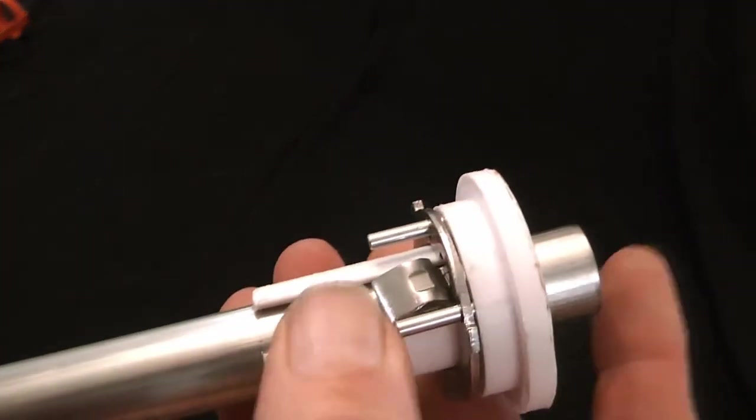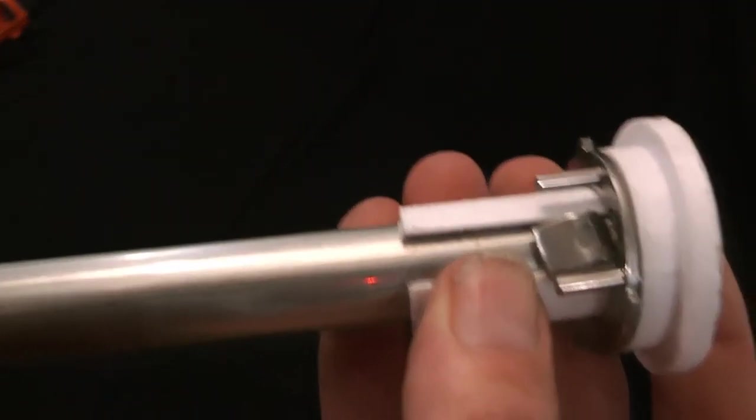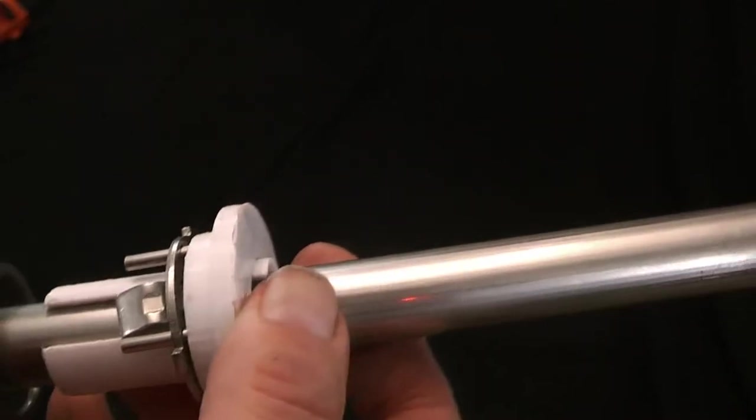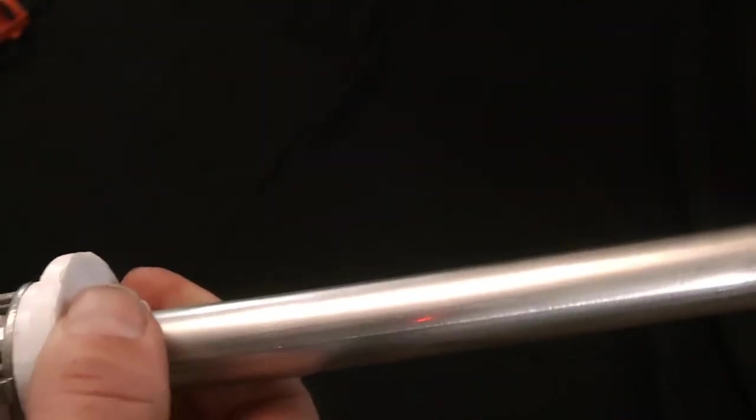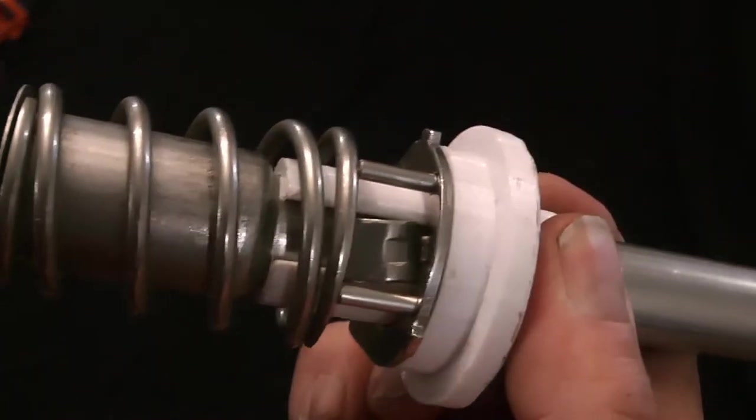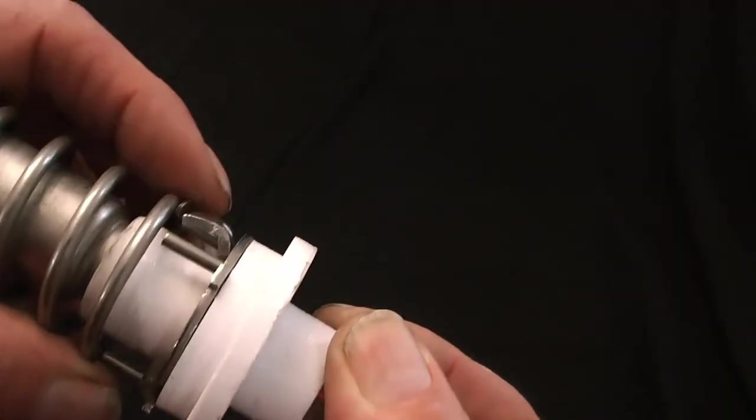Next, you just take the angular mandrel and the sleeve and slide them over the shaft. Make sure that the pin is just sitting on the face of the spring like that.